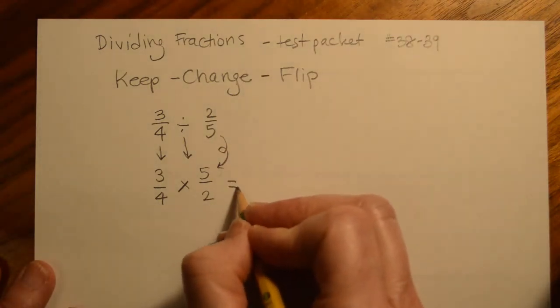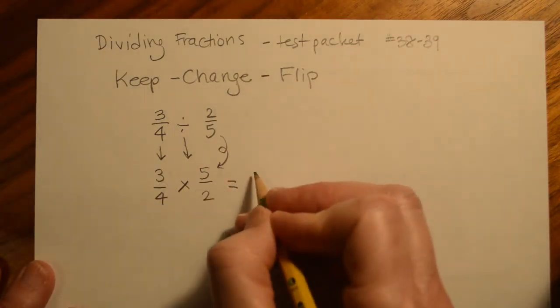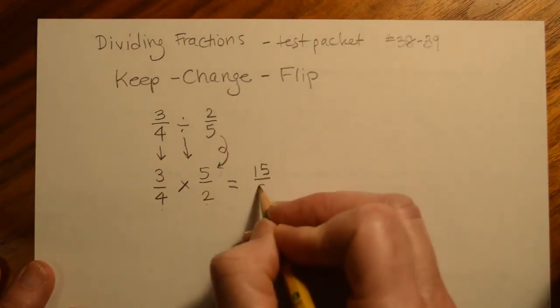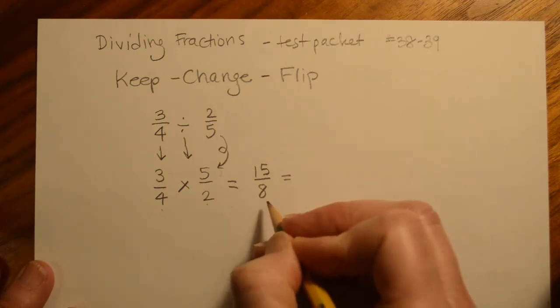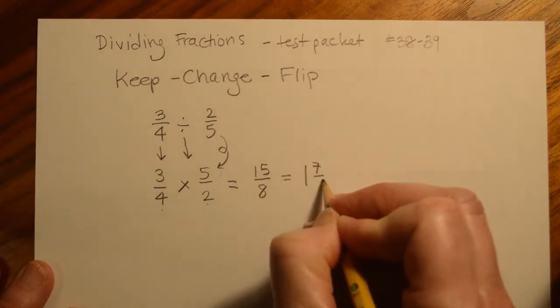And then we just multiply. All right, so again, 3 times 5 is 15. 2 times 4 is 8. That gives us an improper fraction. So we would change that. This would become 1 and 7/8.